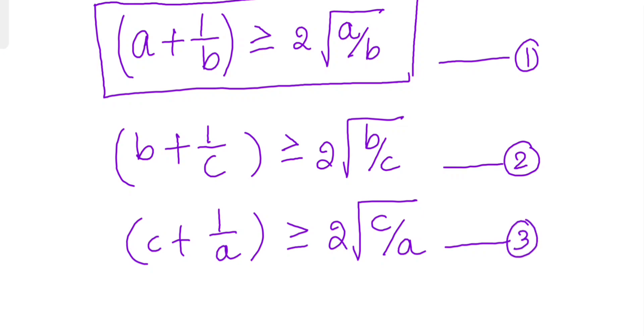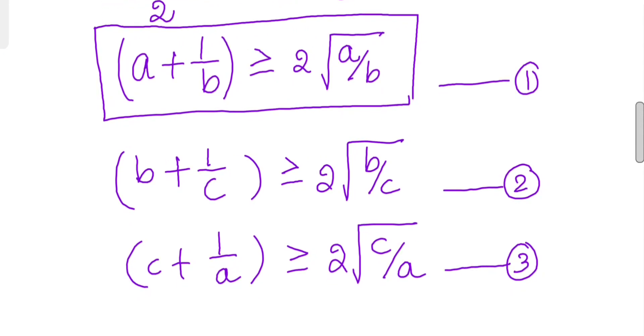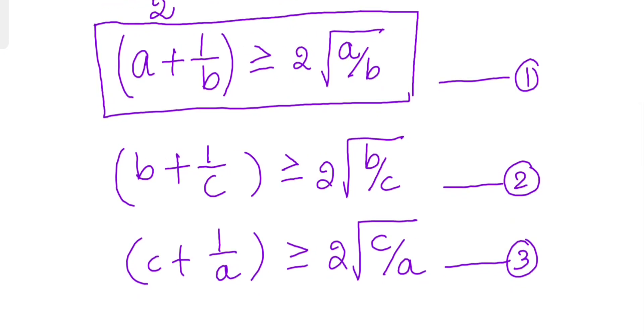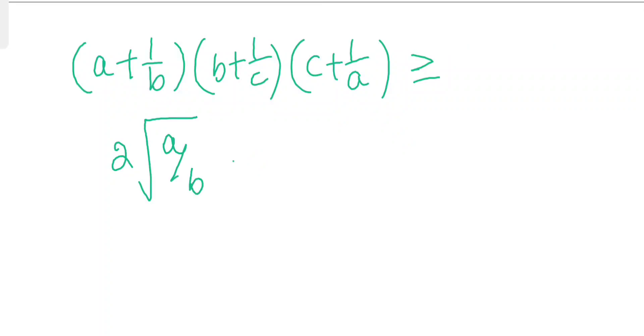Now let's multiply equation 1, equation 2, and equation 3. So if we multiply we'll get a plus 1 by b into b plus 1 by c into c plus 1 by a greater than or equals to 2 into a by b, 2 into b by c, and 2 into c by a. And simplifying will give me